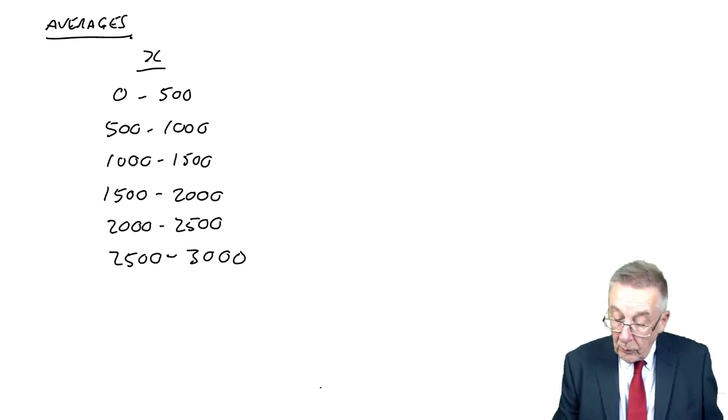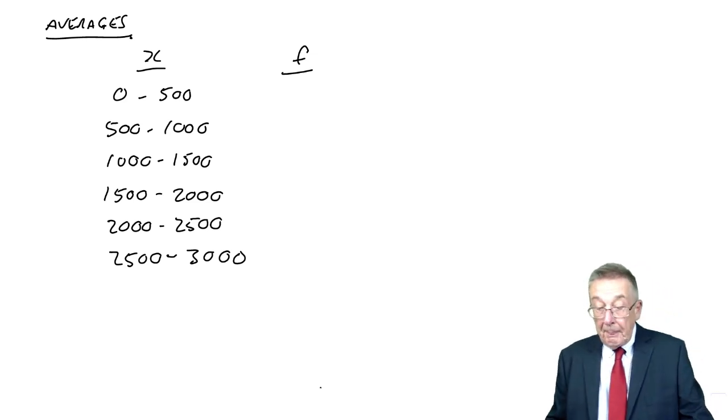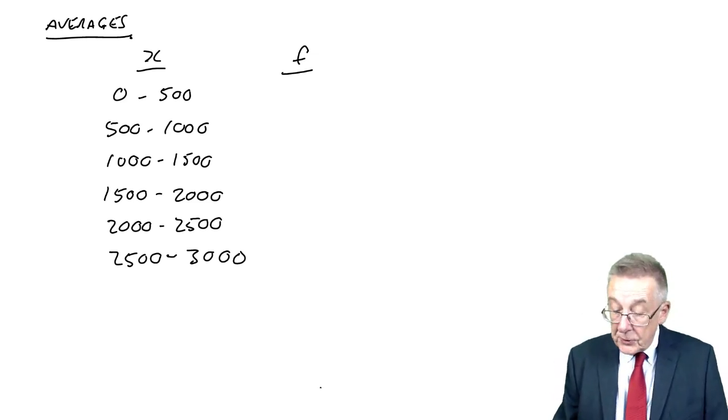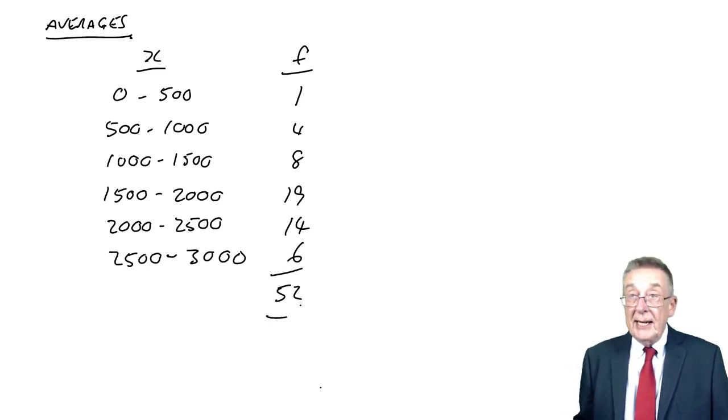And the frequency, the number of weeks the bill was in each of those ranges: 1, 4, 8, 19, 14, 6, a total of 52 weeks.